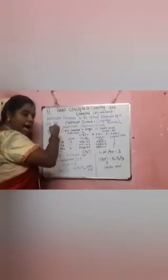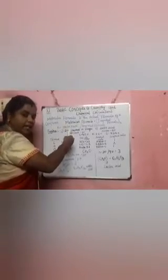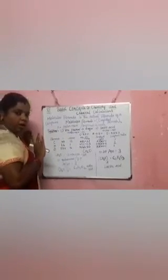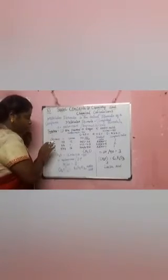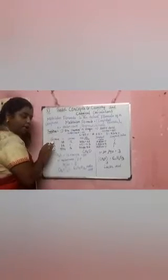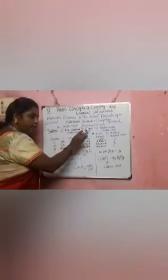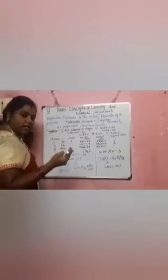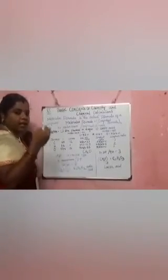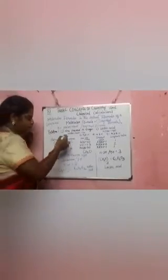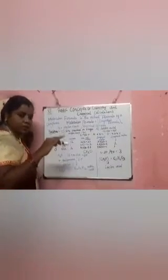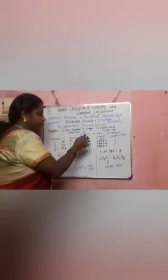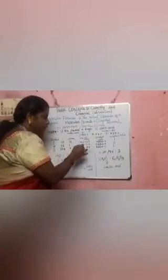Whatever percentages are given in the question, divide each by the atomic mass of the corresponding element. For carbon: 40% divided by 12 gives 3.3. For hydrogen: 6.6% divided by 1. For oxygen: 53.4% divided by 16. This gives you the relative number of molecules for each element.